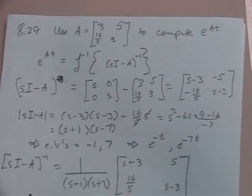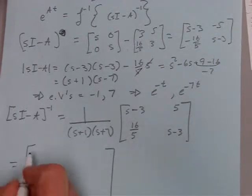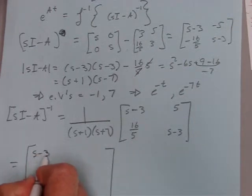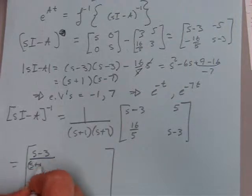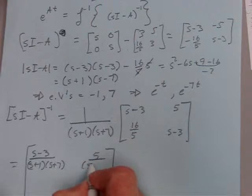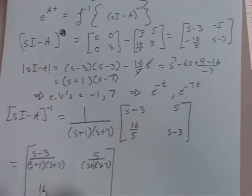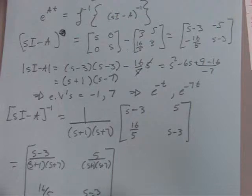Okay, and so if we want to plug it all in, we'll have s minus 3 over s plus 1 times s minus 7, 5 over the same thing, and 16 fifths over the same thing, and again.